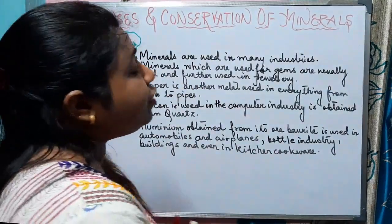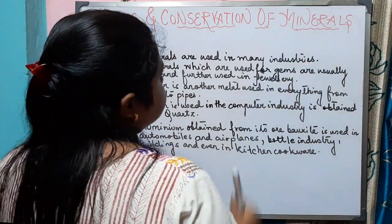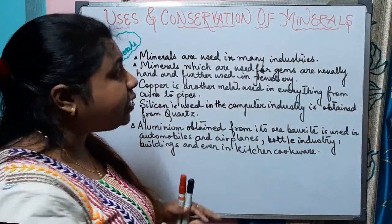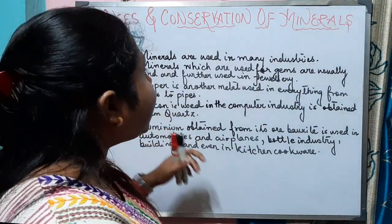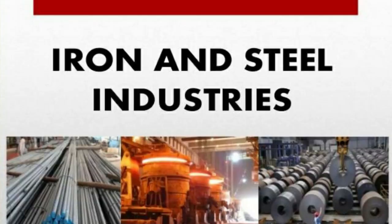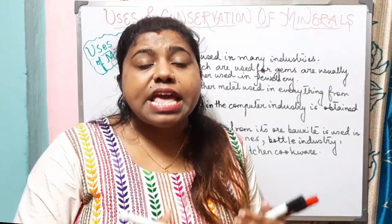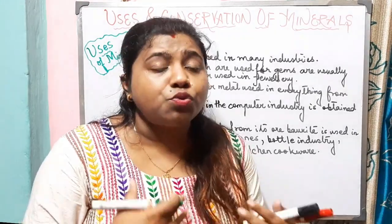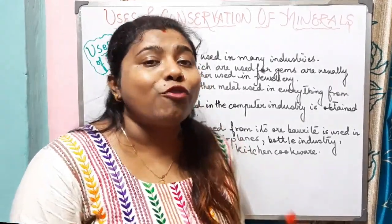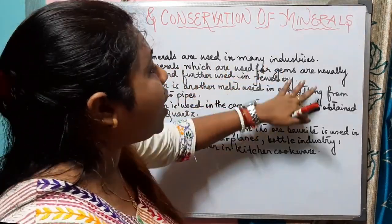Let us see what are the different uses of minerals. Minerals are used in many industries; many industries are dependent on minerals because they obtain their raw materials from minerals, like the iron and steel industry. Not only that, the industries obtain their raw materials from minerals, but the electrical equipment and machinery that are used to run the industries are also formed of minerals.